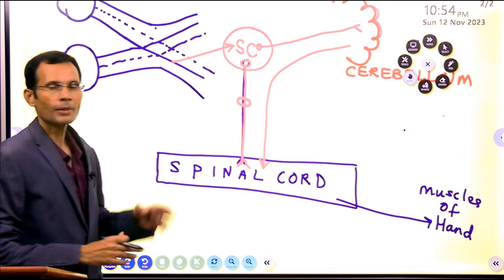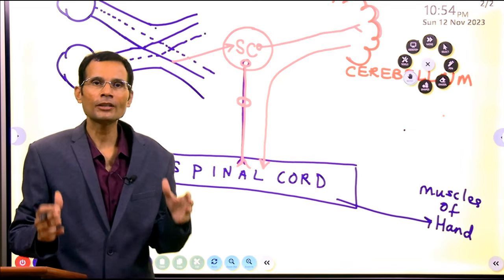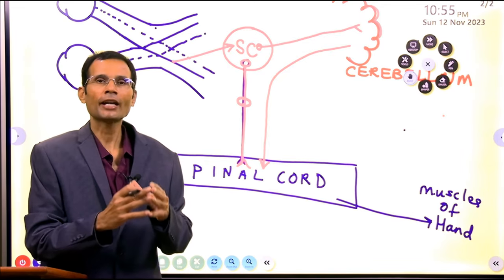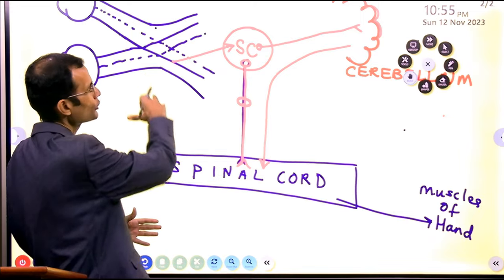As you can see in the diagram, from the spinal cord, signals will be sent to the muscles of hand and there will be excellent coordination of the hand muscles based on the visual inputs.